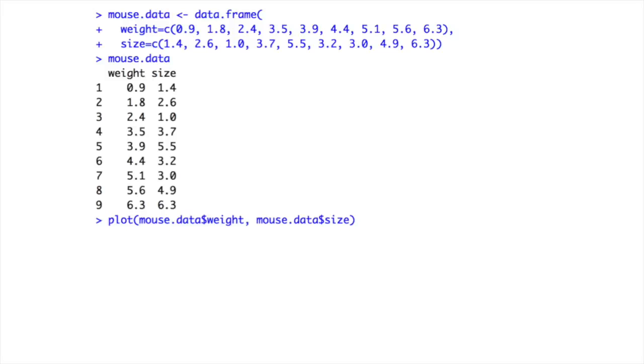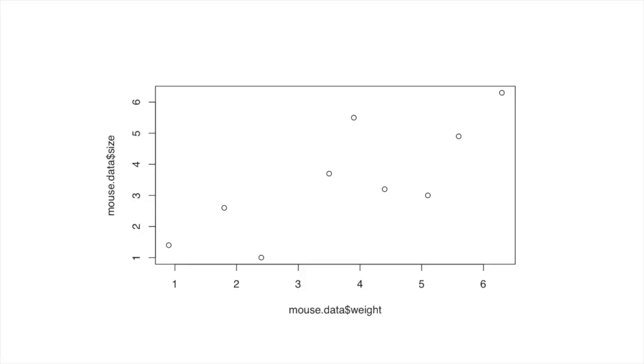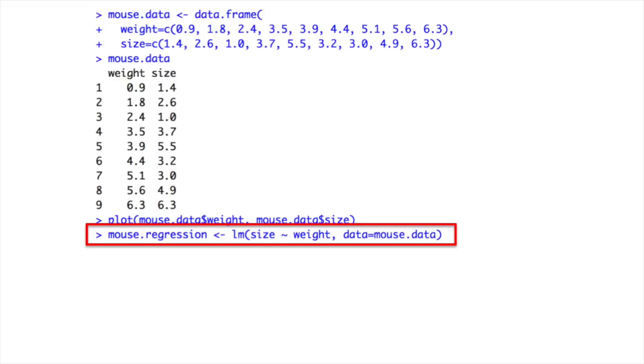I then use the plot function to plot the data on an XY graph. This is where I set up the actual linear regression. I call the function LM, which stands for Linear Models, and I pass it a formula, and I pass it the mouse data.